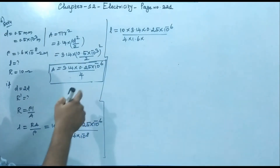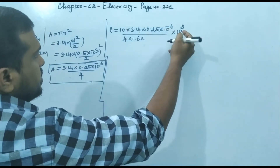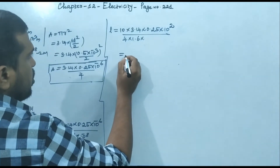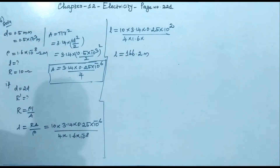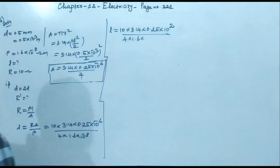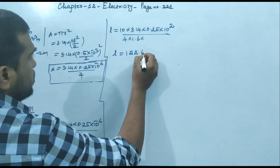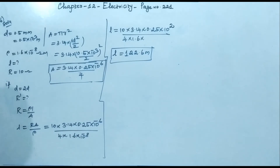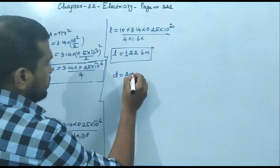Taking 10⁻⁸ from the denominator to the numerator gives 10⁺⁸, and combined with 10⁻⁶ in the numerator gives 10². Solving this expression gives the length L = 122.6 meter.